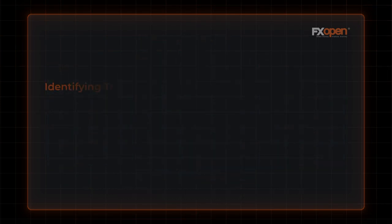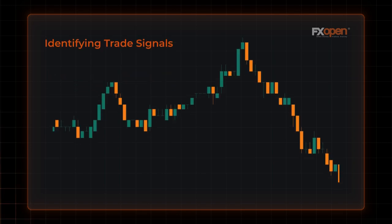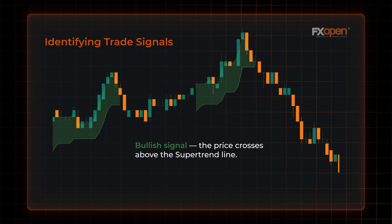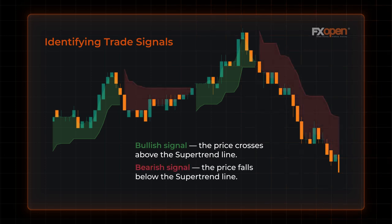The Supertrend indicator offers fairly simple bullish and bearish signals. Bullish signals occur when price crosses above the Supertrend line. Bearish signals are generated when price falls below the Supertrend line.